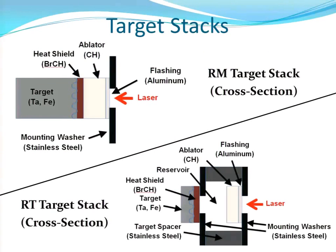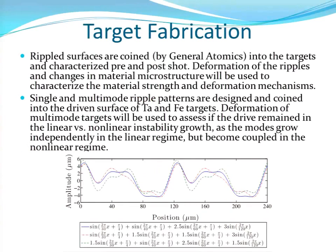This shows the different target stacks that we can use, whether we're doing RM or RT targets — the difference being the way the laser interacts with the target. This talks about the target fabrication, which is done mostly at General Atomics, and at Caltech we've gotten to participate in fabricating targets and doing some of the analysis afterwards. Currently they're working on coining this multimode pattern onto our targets. One of the things we did with our simulation tool was to test different multimode patterns to see which one we'd actually be able to analyze post-experiment.